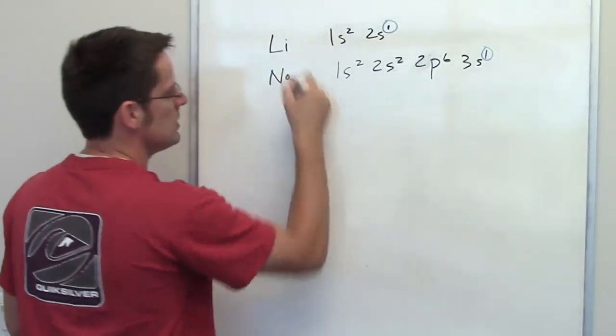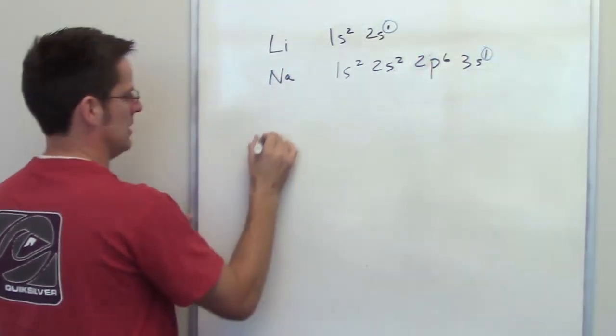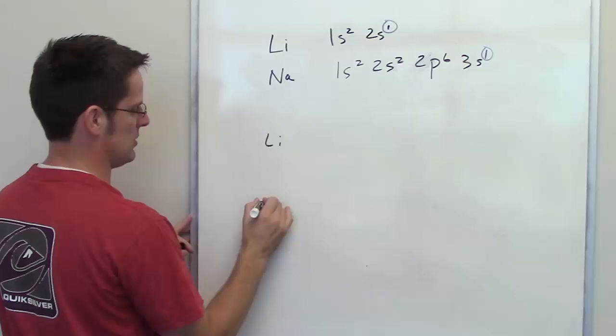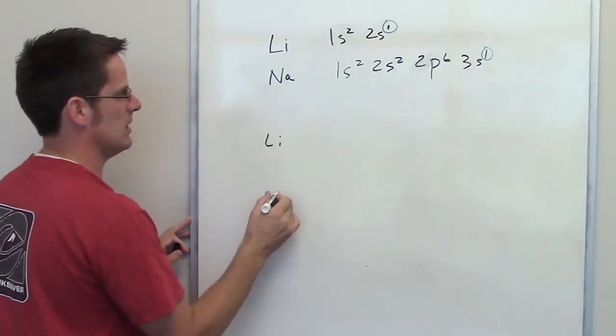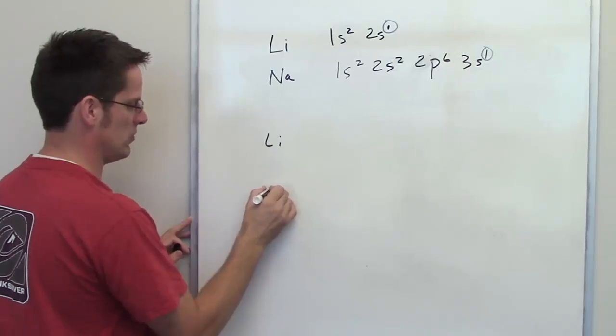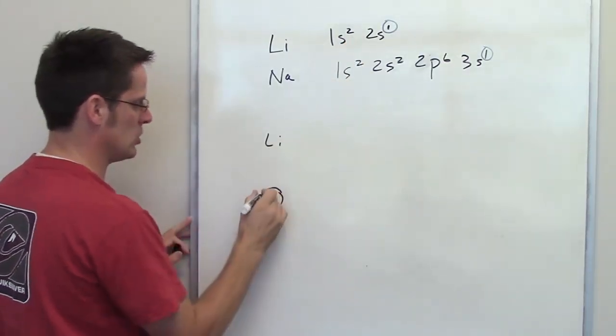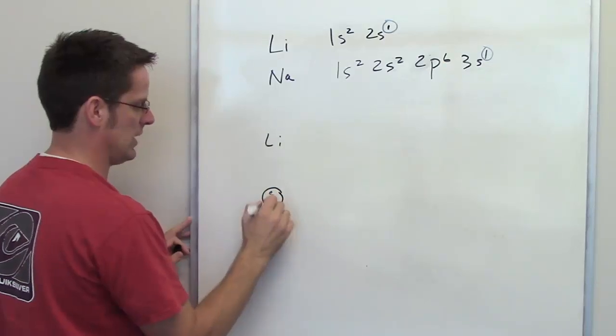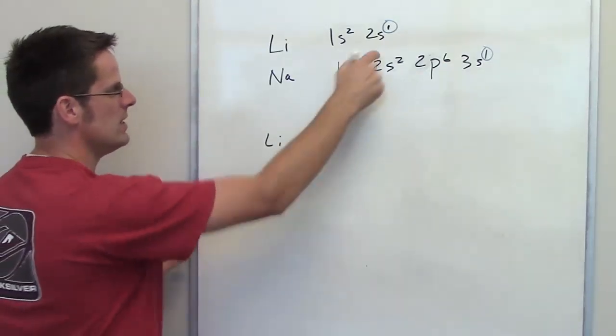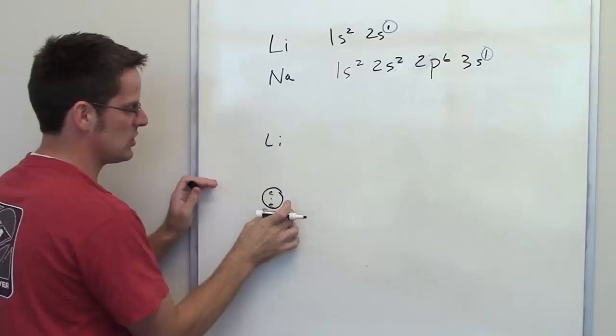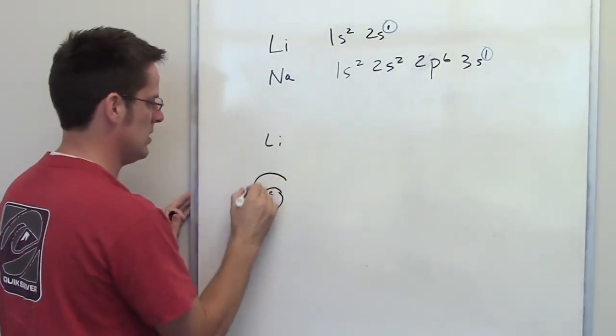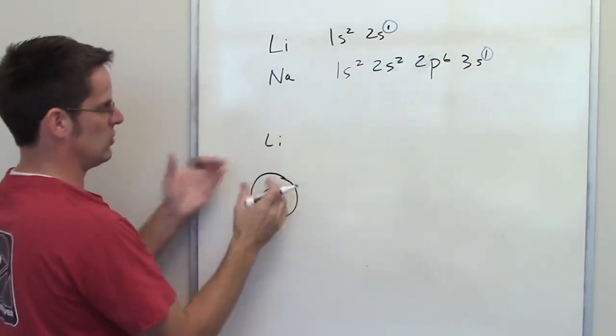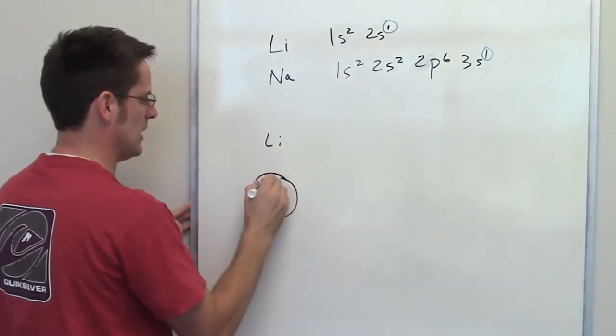So you can imagine lithium, if I were to draw this out, lithium has a nucleus, represented by this dot. It has a 1s orbital, which is very, very small. And inside that 1s orbital, there are two electrons soaring around in there. Its 2s orbital, just like this 1s orbital, just like a Russian nesting doll, is nested inside the 2s orbital. So this is like a big sphere, and the 2s orbital has a single electron in it.